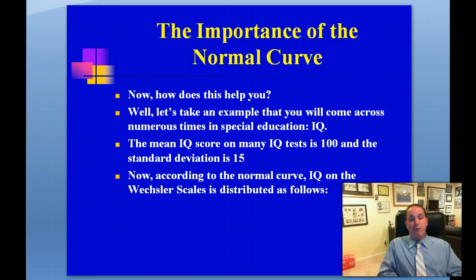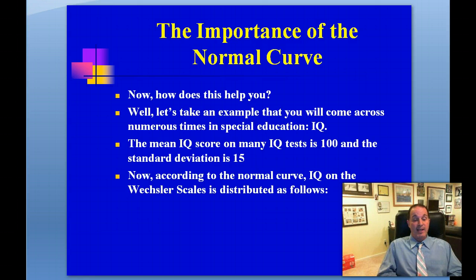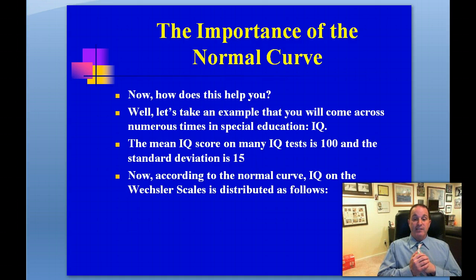Currently as I give this lecture, the WISC is in its fourth edition. This IQ test — the most valid and reliable IQ test on the market — is the one most often used in school districts today. Just like many IQ tests, the mean on this IQ test is 100 and the standard deviation is 15. So 100 is average with a standard deviation of 15. If you look at the normal curve, IQ on the Wechsler scales would be distributed as follows.